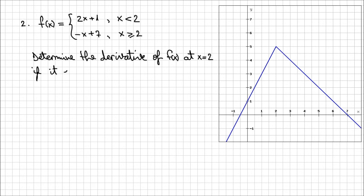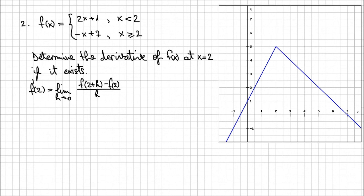What we want to determine is whether the derivative at x equals 2 exists or not. Once again the derivative is given by the first principle definition: f prime of 2 is the limit when h approaches 0 of f(2+h) minus f(2), all over h. Since f of x is piecewise defined, we have to handle the two cases — x less than 2 and x greater than or equal to 2 — separately, otherwise we can't calculate f(2+h) or f(2).